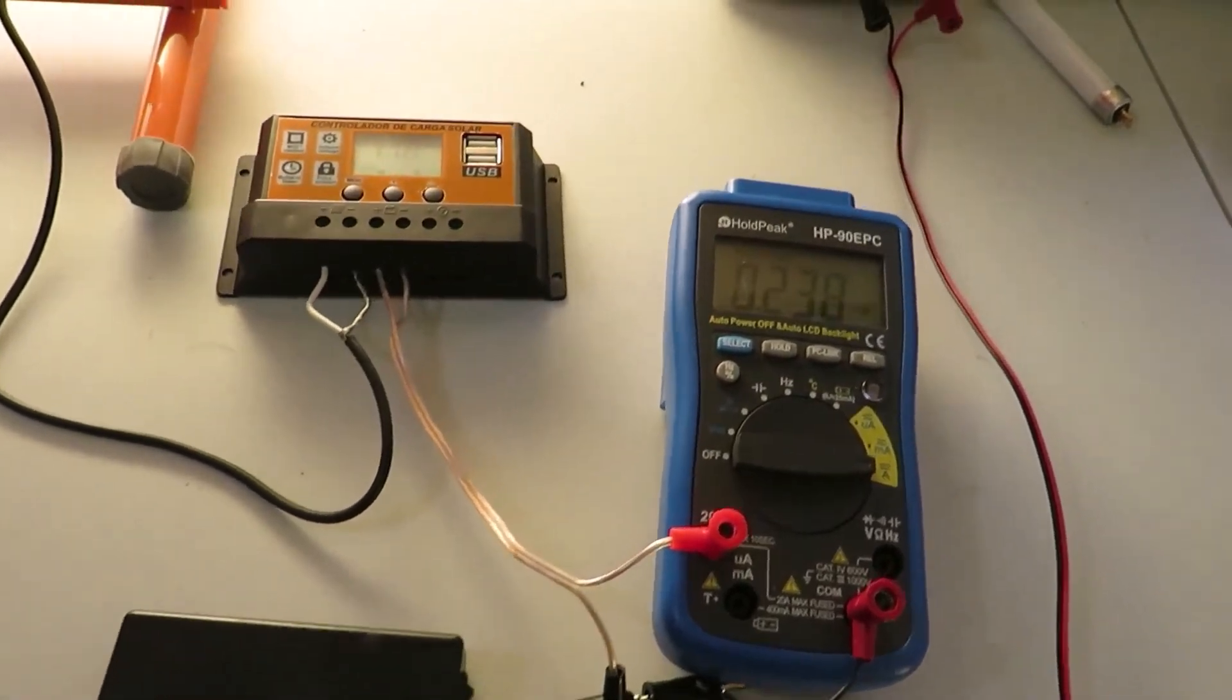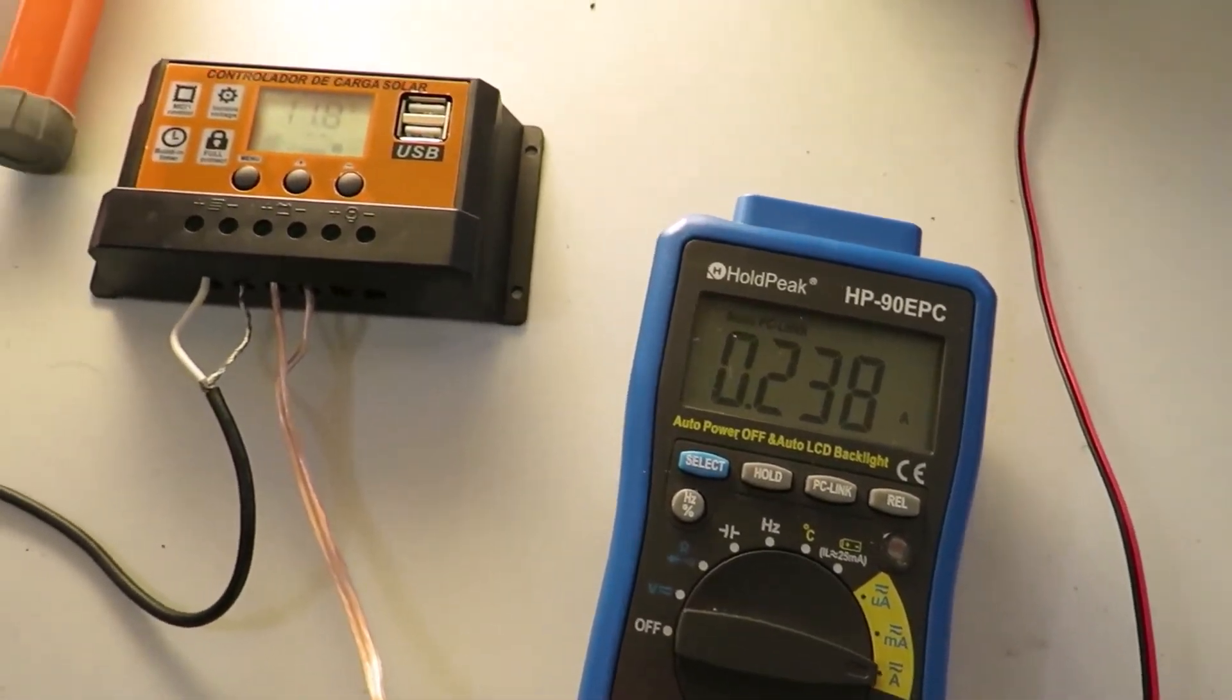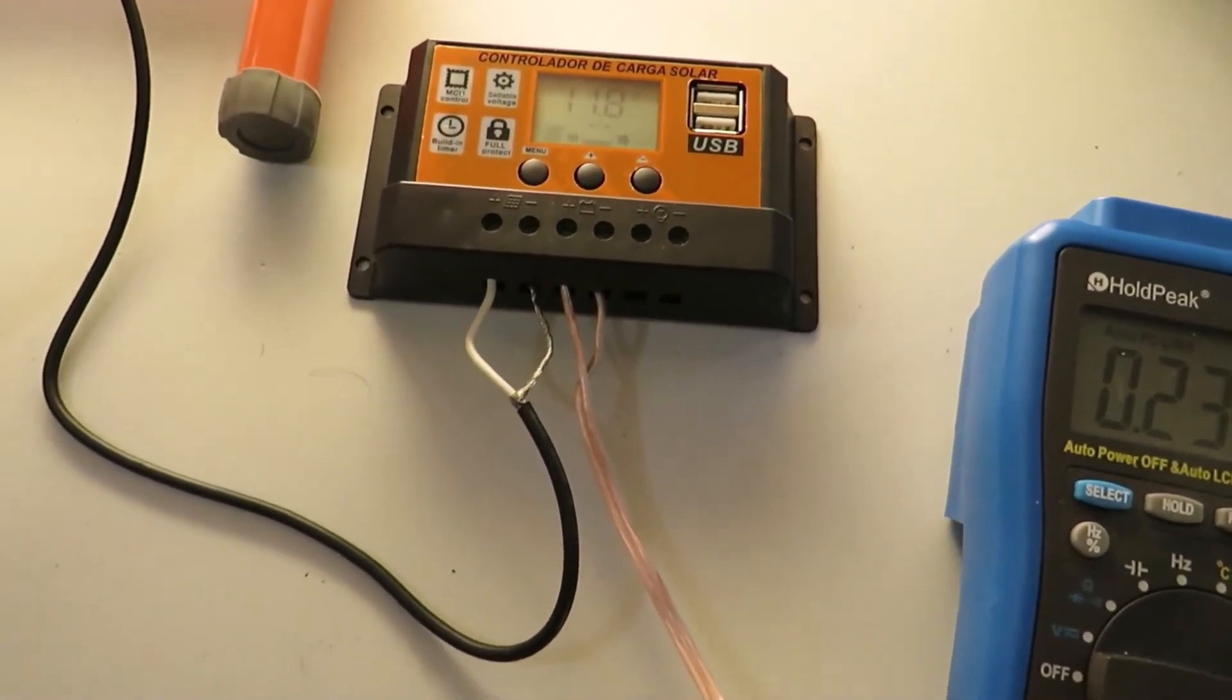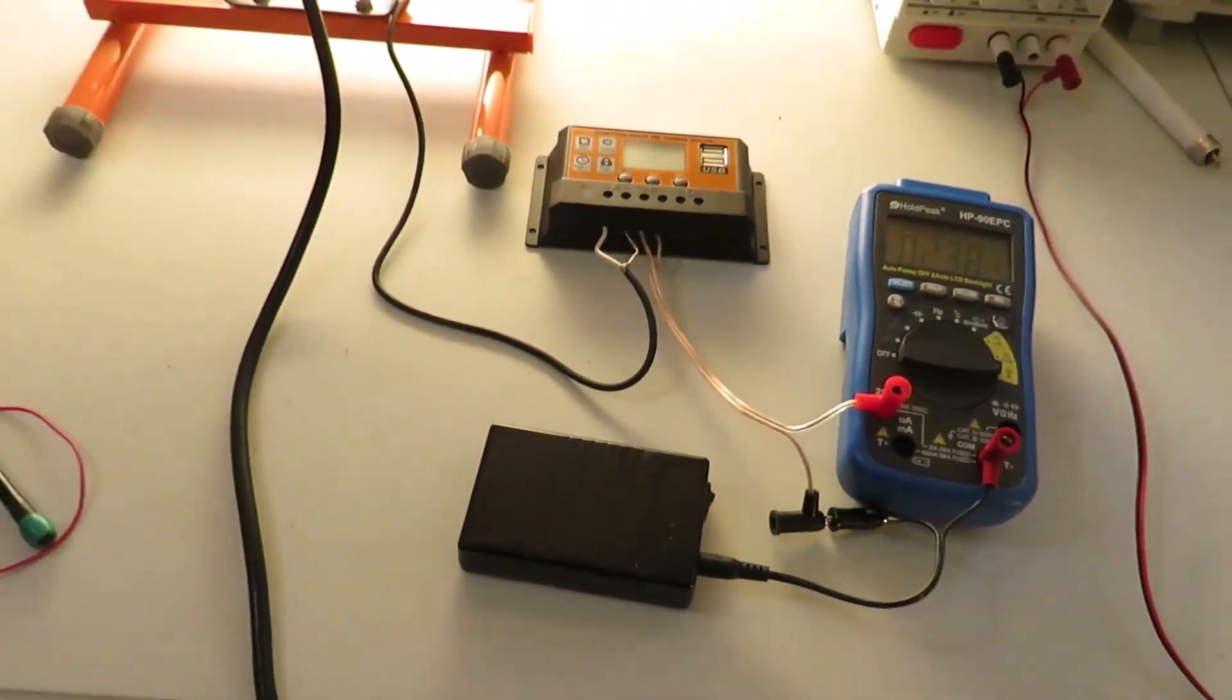Now the battery is connected through the charge controller. Now you can see the charging current is 0.238 amp. It is even less than the direct connection case.